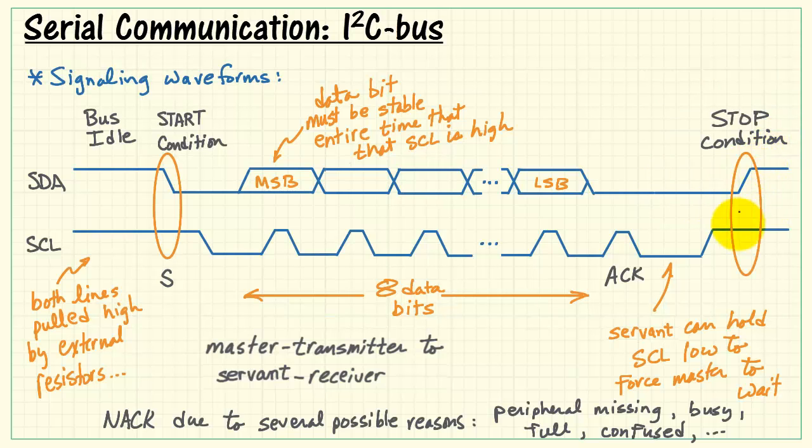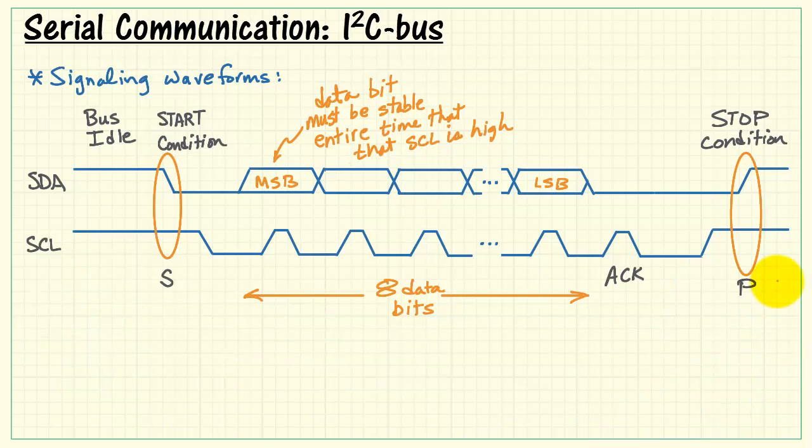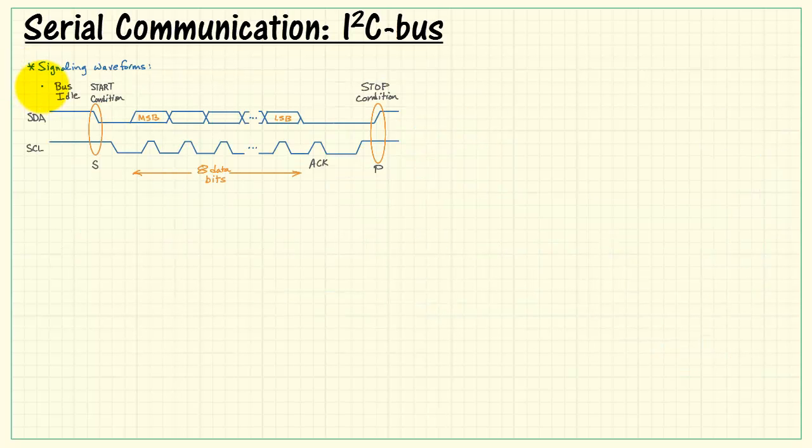At this point, then the master can send SCL high and then raise SDA high, and that signals the end of the transaction with a stop condition. Once the stop condition has been generated, then the bus goes back to the idle state.